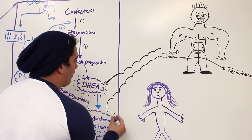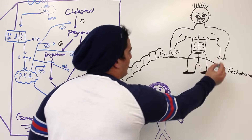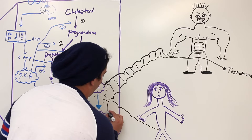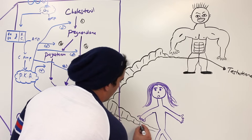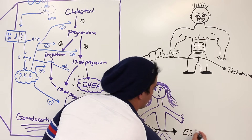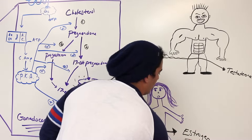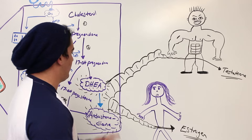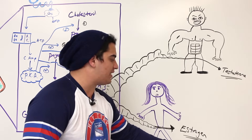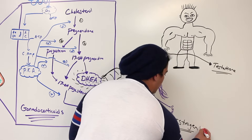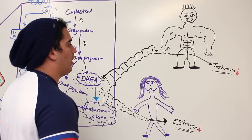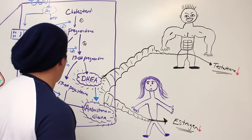For the female, what do DHEA and androstenedione do? They act in the follicular cells, and can lead to the formation of estrogen. So the overall effect of dehydroxyepiandrosterone and androstenedione on the male and female is making testosterone and estrogen — but in very minimal amounts. These are very weak, weak gonadocorticoids. They're very weak androgens, which are sex hormones.